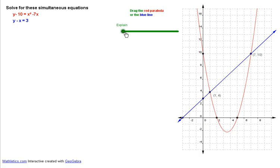So how do you find where they're equal? You make y the subject of both the equations. We have added 10 to both sides of this equation, and we have added x to both sides of this equation, and we have y = x² - 7x + 10 and y = x + 3.